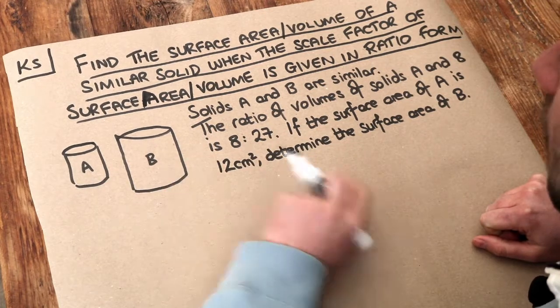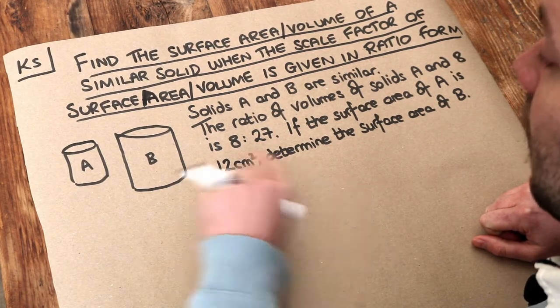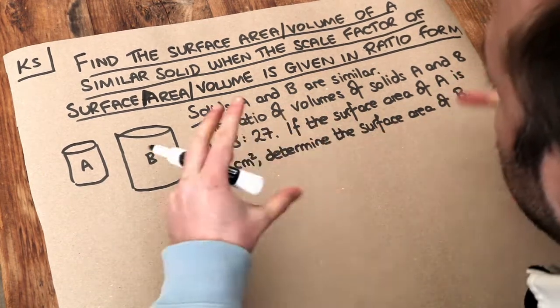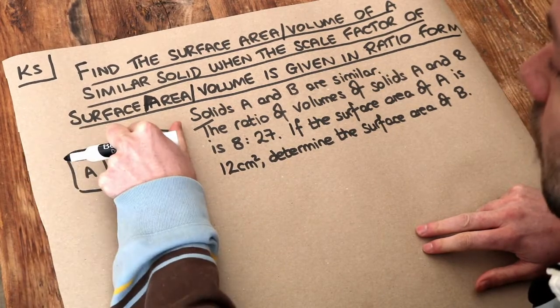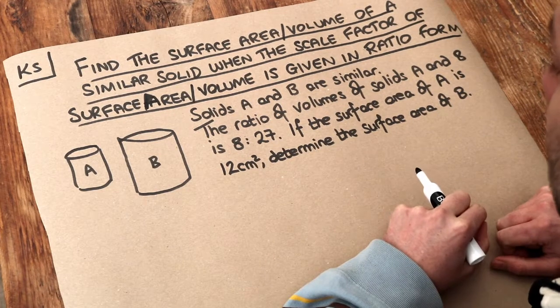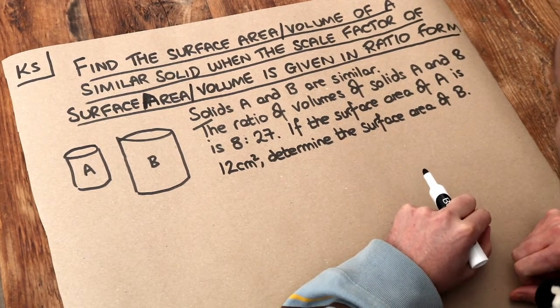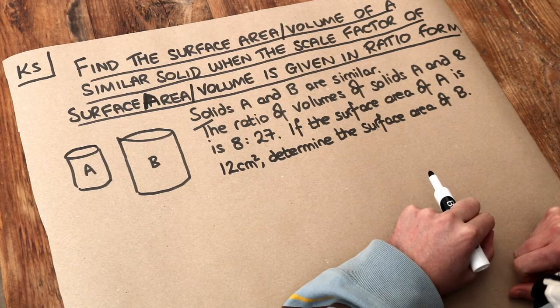So we've got two solids A and B which are similar. Remember, similar in maths means that the two things are the same shape so everything's in the same proportion. For example, if you were to double the height then you're also doubling the width or diameter. The ratio of volumes of solids A and B is 8 to 27. If the surface area of A is 12 centimeters squared, determine the surface area of B.